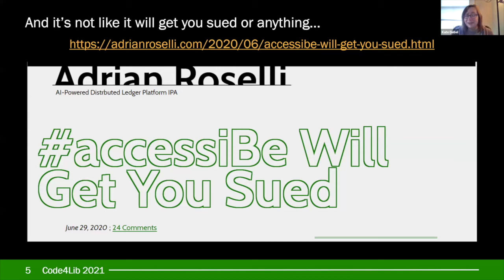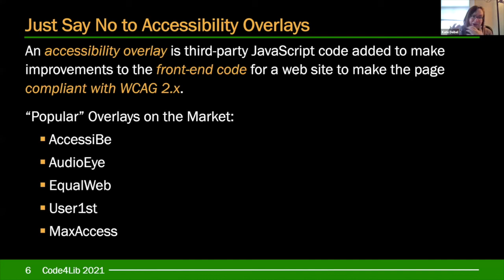An accessibility overlay is a third-party JavaScript code you add to a page that supposedly will tweak the front-end code for a website to make the page compliant with WCAG 2.x. There are a lot of popular ones: AccessiBe, AudioEye, EqualWeb — which has been offering free things to public libraries lately. For example, the Louisiana Department of Health has a side tab called accessibility which opens up the AccessiBe platform, with features like turning on a seizure-safe profile that eliminates flashes and reduces color. However, you'd have to turn this feature on in case you actually have epilepsy — so while in the middle of having a seizure, you can go over and click to turn it on.